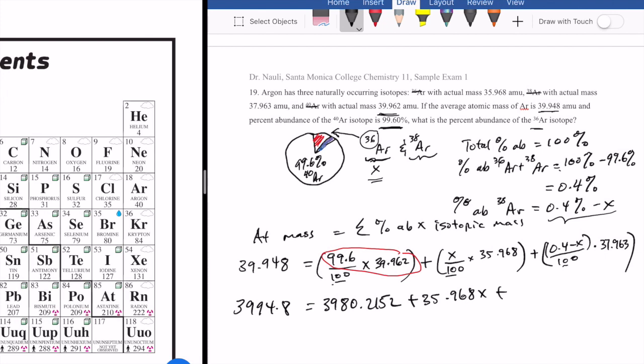This one would be 35.968x. And then this side, you got 0.4 times. You know, you got to do this multiplication out here, distribute out the 0.4 and the x. So you got 0.4 times 37.963, which gives you 18.1852 minus the 37.963x.